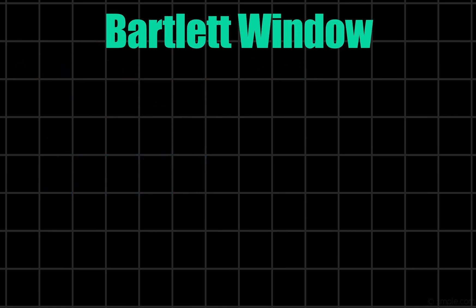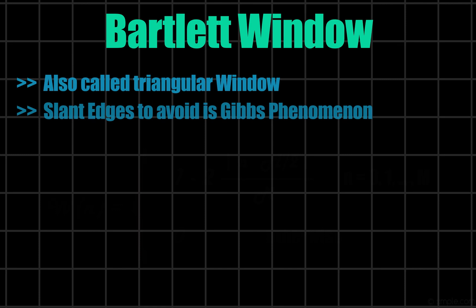A Bartlett window is also known as triangular window, as the response is triangular in nature. To avoid Gibbs phenomenon, we use windows with slant edges. As higher side lobe strength provides gain in the stop band which is not desired.